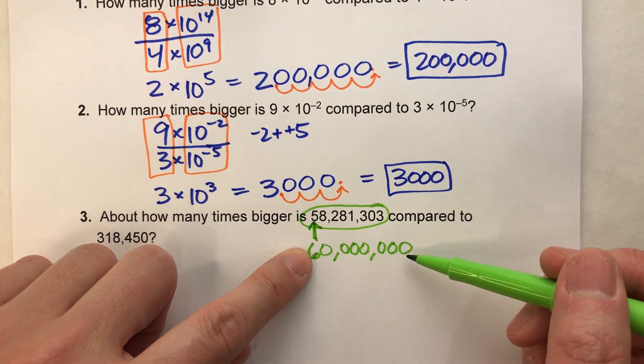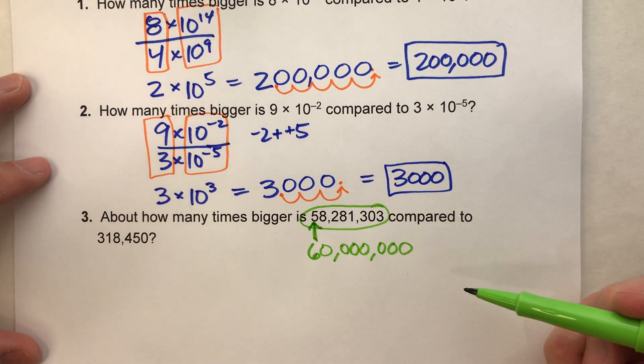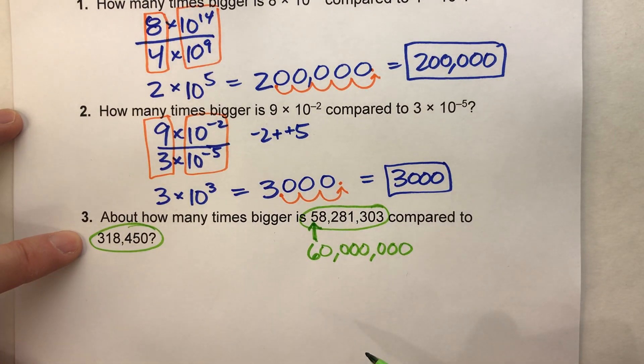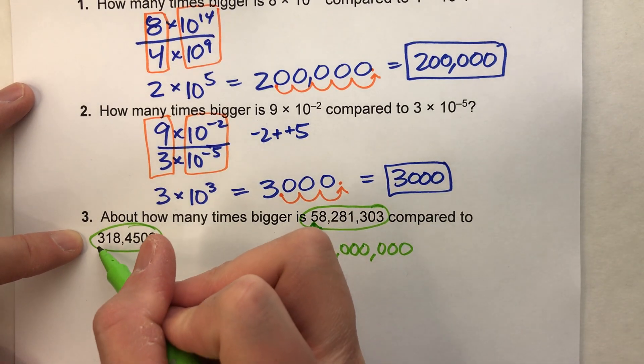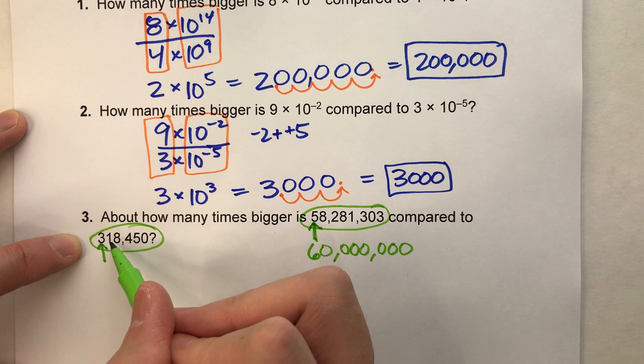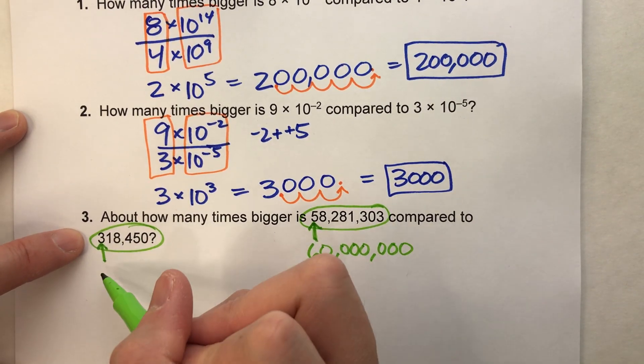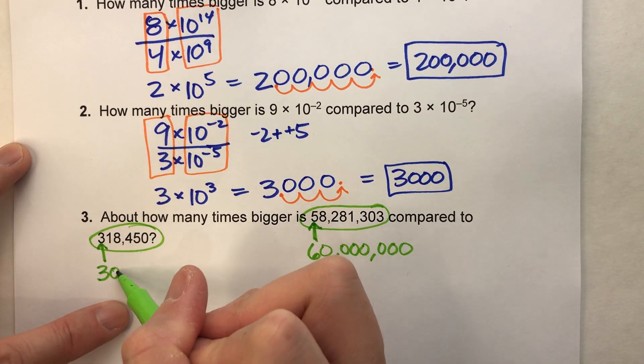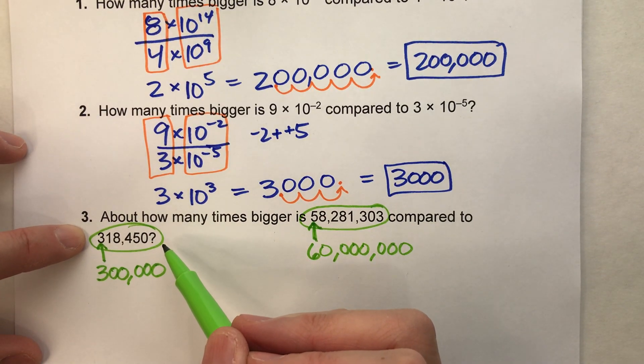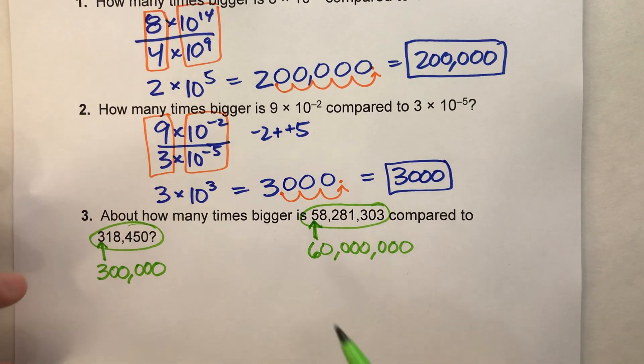58 million is about 60 million. It's a little bit big, but I mean, it's pretty close. So we're just rounding it. And we'll do the same to this side over here too, this number, 318,450. So we'll round it to the greatest place value, which is the three. The digit after the three is a small number, so we'll just keep the three the same. And then we'll zero out everything else. So 318,450 is approximately 300,000.